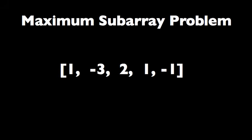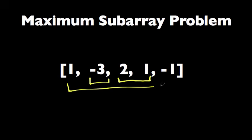You might ask, what's a subarray? A subarray is basically an array within an array. So an example of a subarray would be 2, 1 in this example, or just one element, negative 3, or it could be the whole array. But if we had negative 3 and 1, that's not a subarray because a subarray needs to be contiguous elements. So a subarray is a set of contiguous elements within the given array.